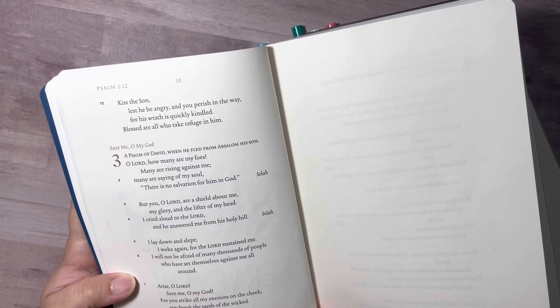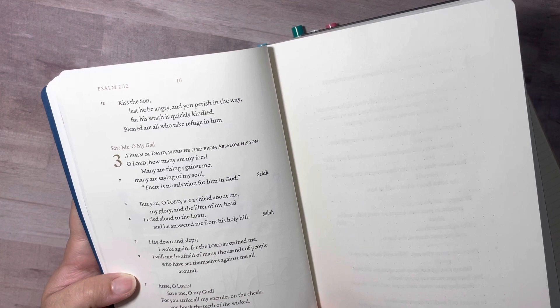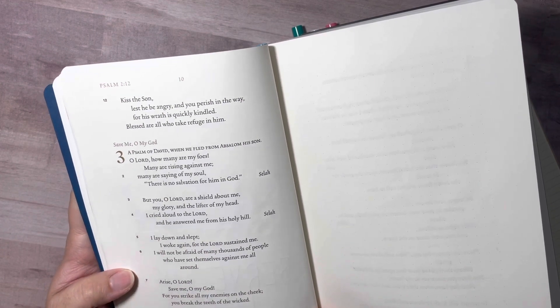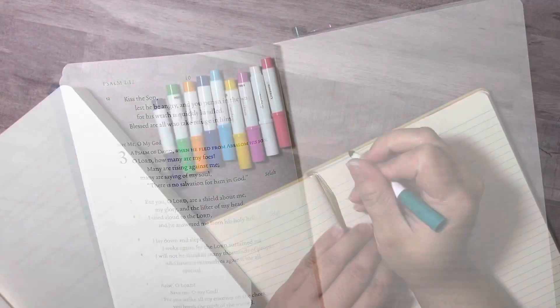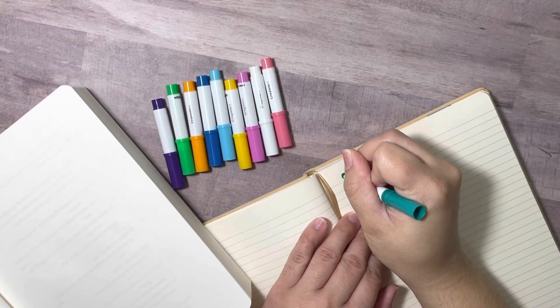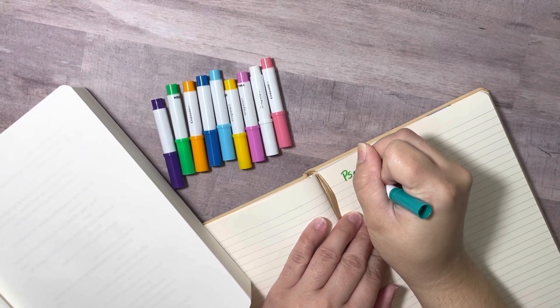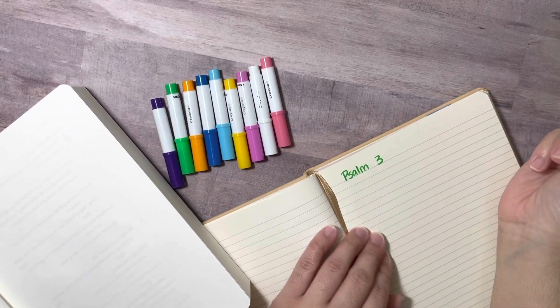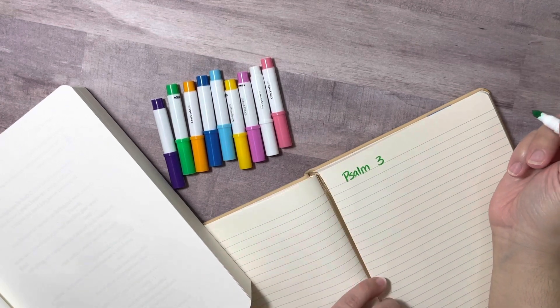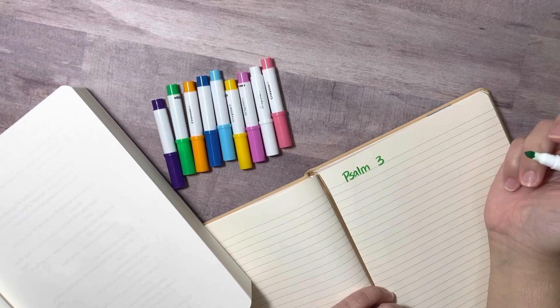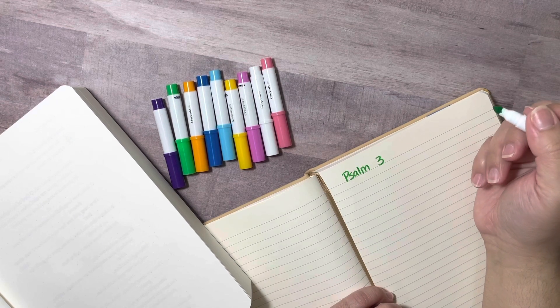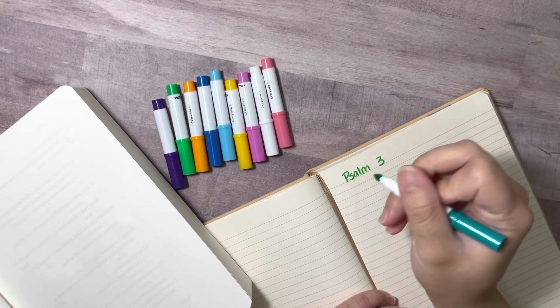So here we are. We're going to start by opening up to Psalm chapter 3 and it says, Save me, oh my God. And we're going to go verse by verse. So I like to start out by putting a title at the top. In this case, it's going to be Psalm 3. That way, if I go back to my notes, I know the study that I am looking at and I have the right notes for that study.